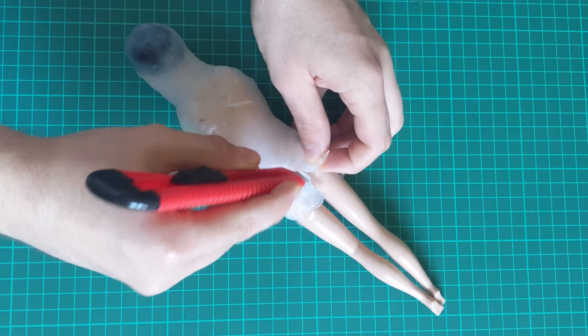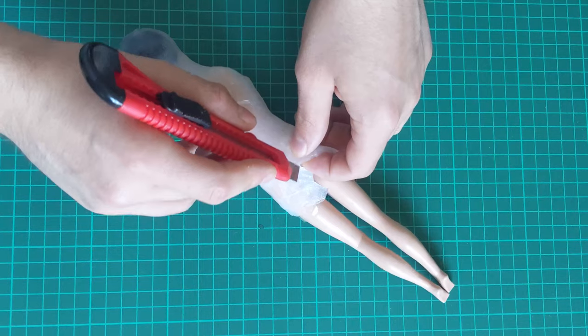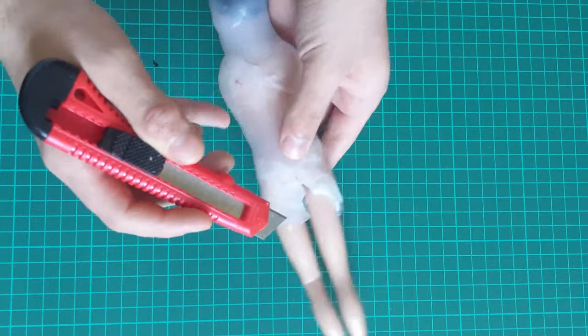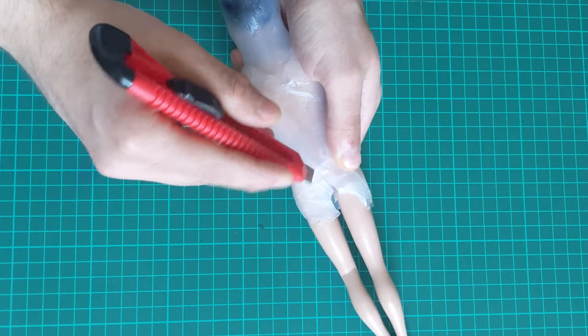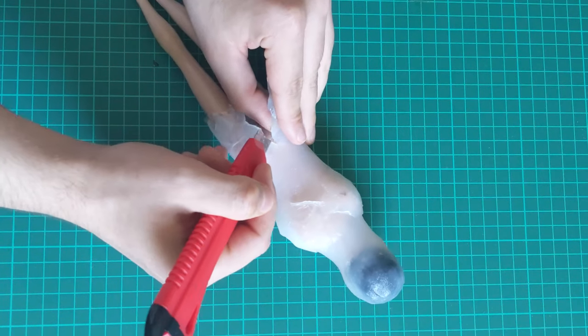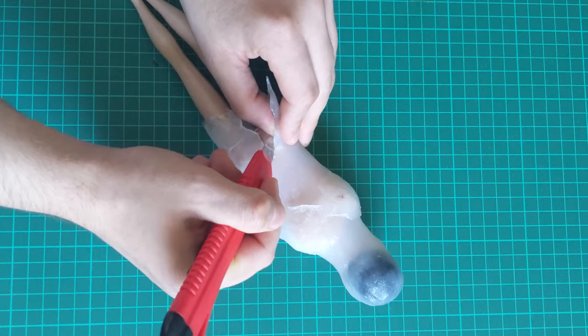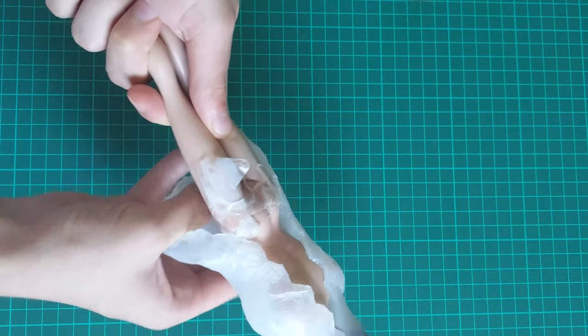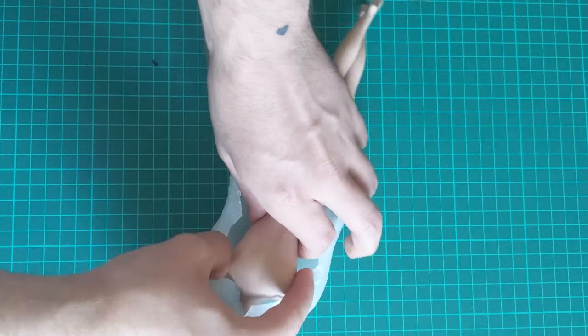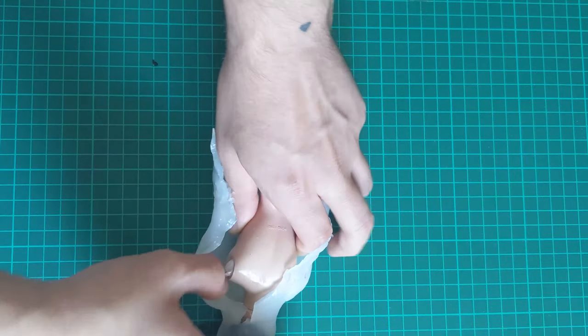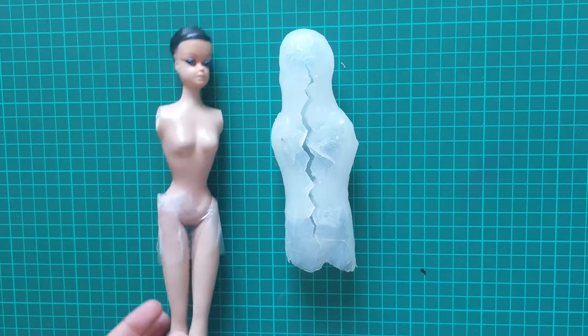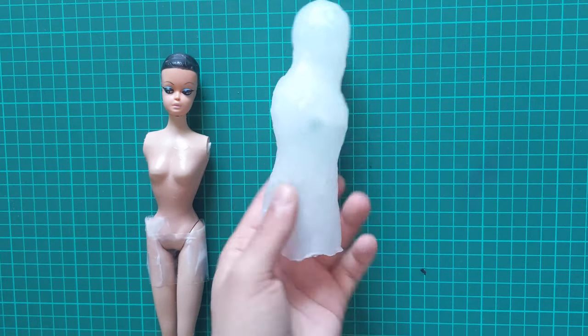After it was done curing, which was about a few hours but ideally overnight, I cut it in a zig-zag pattern as to make it easier to attach when pouring. You want the mold to protrude by a few centimeters as to not leave any weak spots.